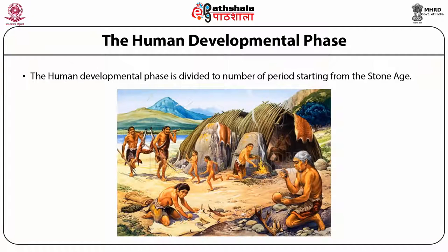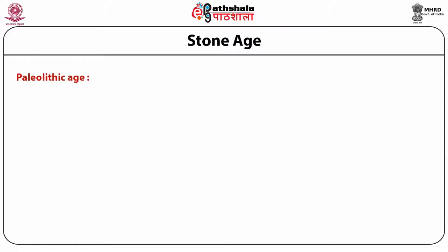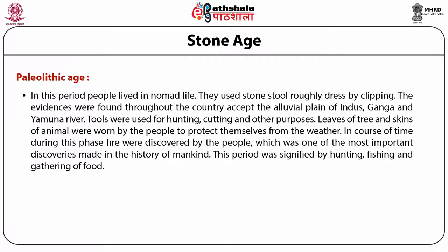The human developmental phase is divided into a number of stages, starting from the Stone Age, which corresponds to what is called the Paleolithic Age. In the Paleolithic Age, people lived a nomadic life, moving from place to place with no permanent settlement, in search of livelihood. Evidences were found throughout the country, except the alluvial plains of the Indus, Ganga, and Yamuna rivers.